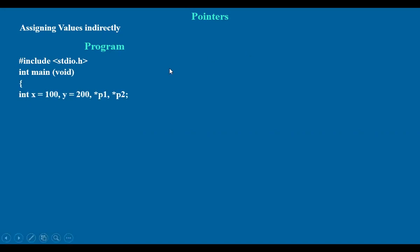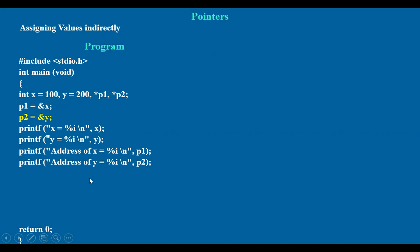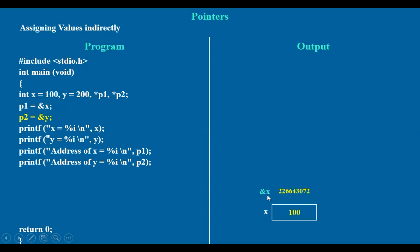Let's take two variables x and y, and two pointers are declared. Values for x and y are assigned: x is 100, y is 200. The address of x is assigned to p1, and the address of y is assigned to p2. So x and y values, address of x (p1), address of y (p2) — we know all these details. The variable x carries 100 at its memory location; ampersand x is the address of x, and p1 points to this value.